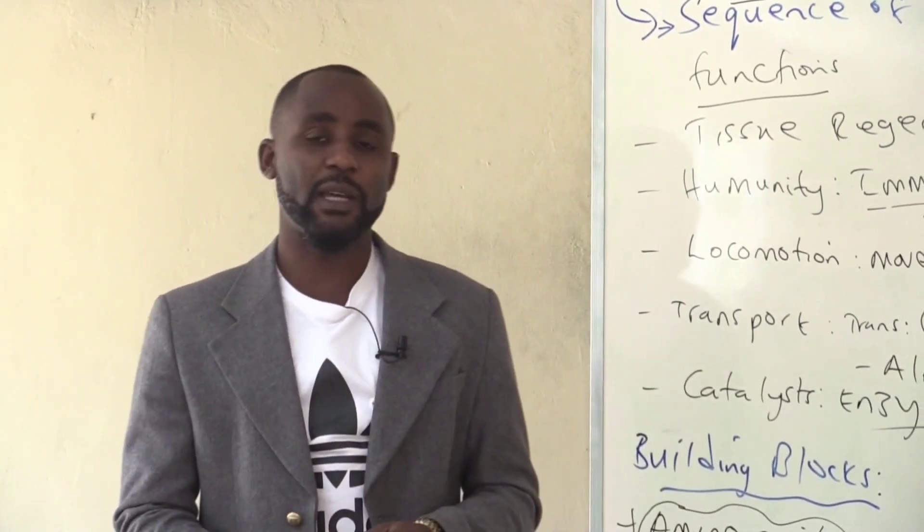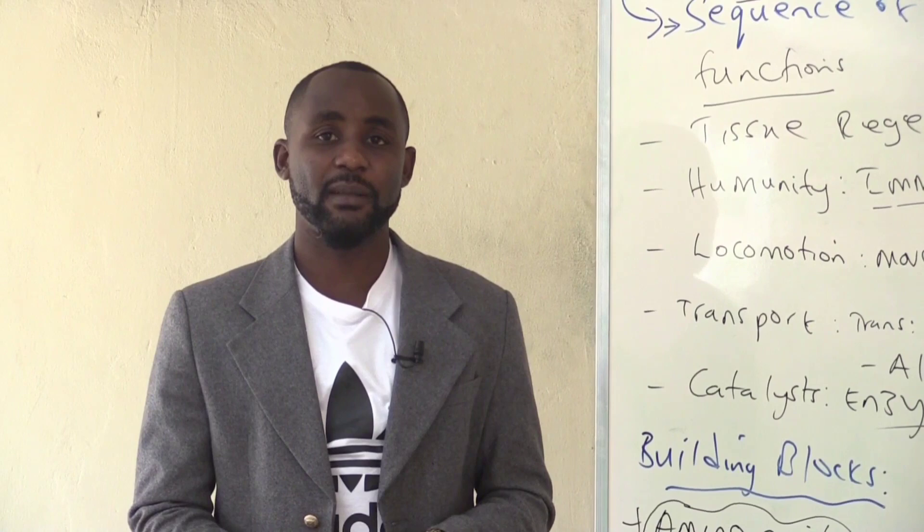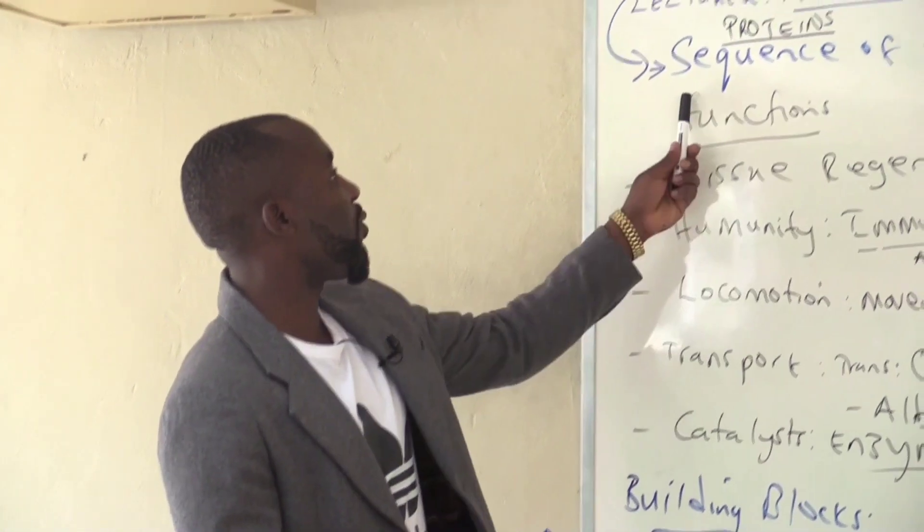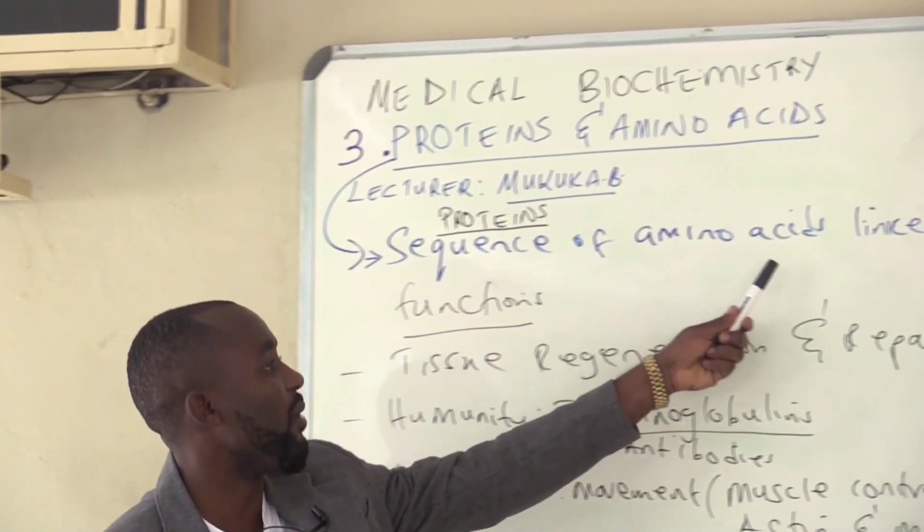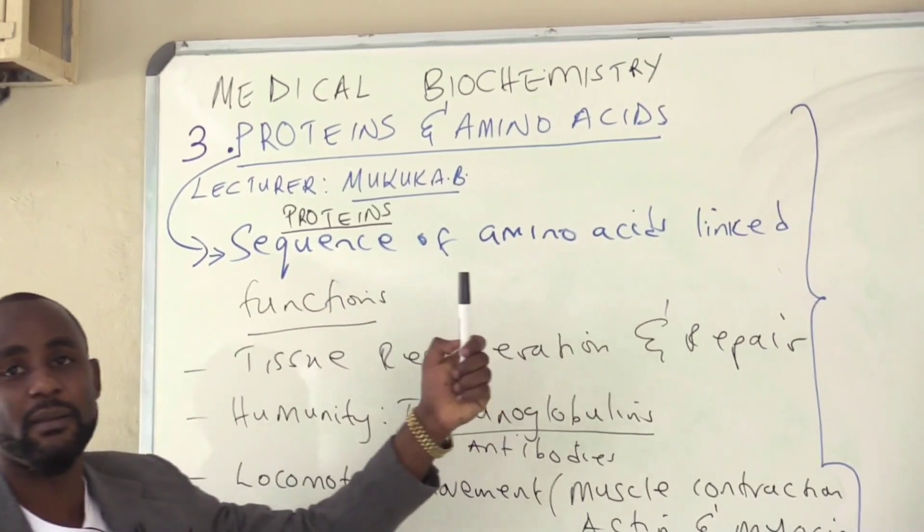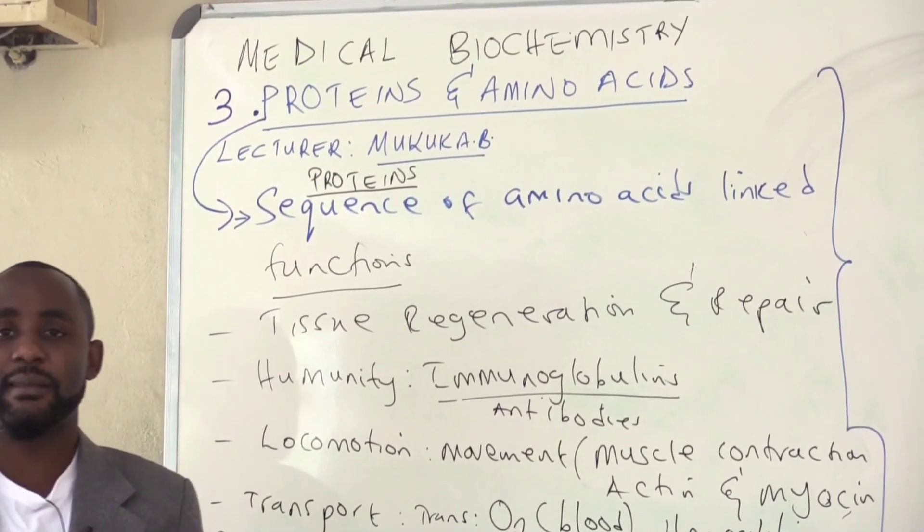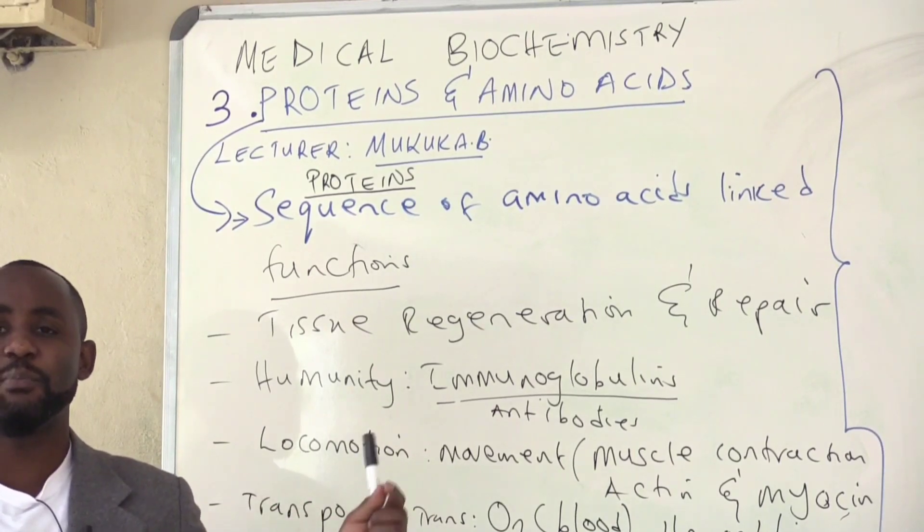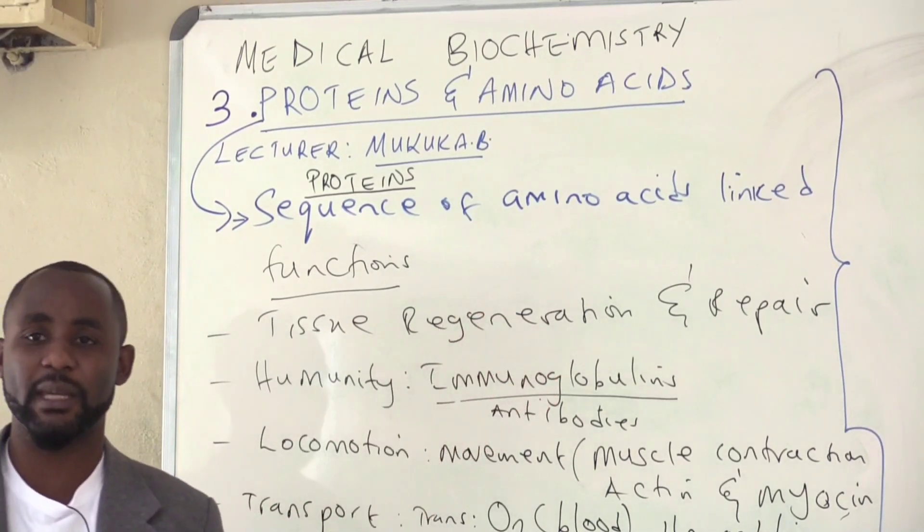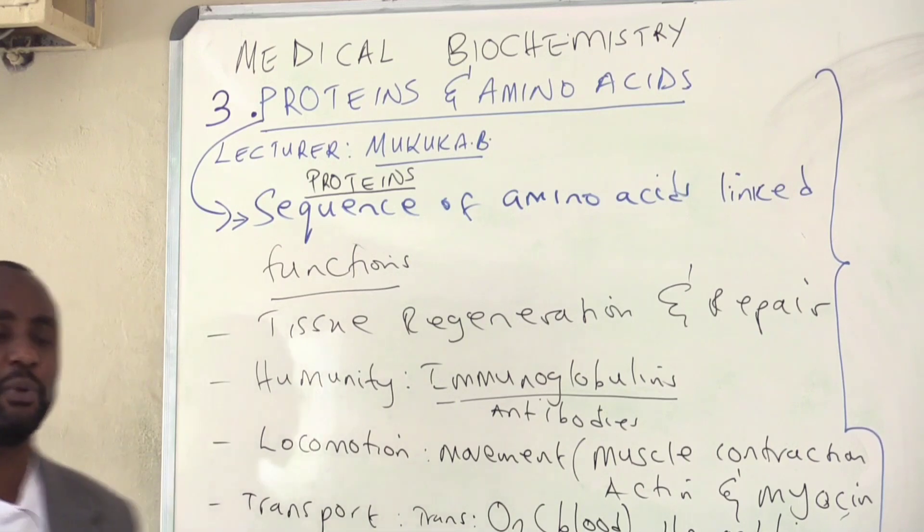This biomolecule that we are looking at today, proteins, is made up of a sequence of amino acids linked. Meaning, we get amino acids, we link them together, and that polymer, that structure that we make is what we simply call a protein.